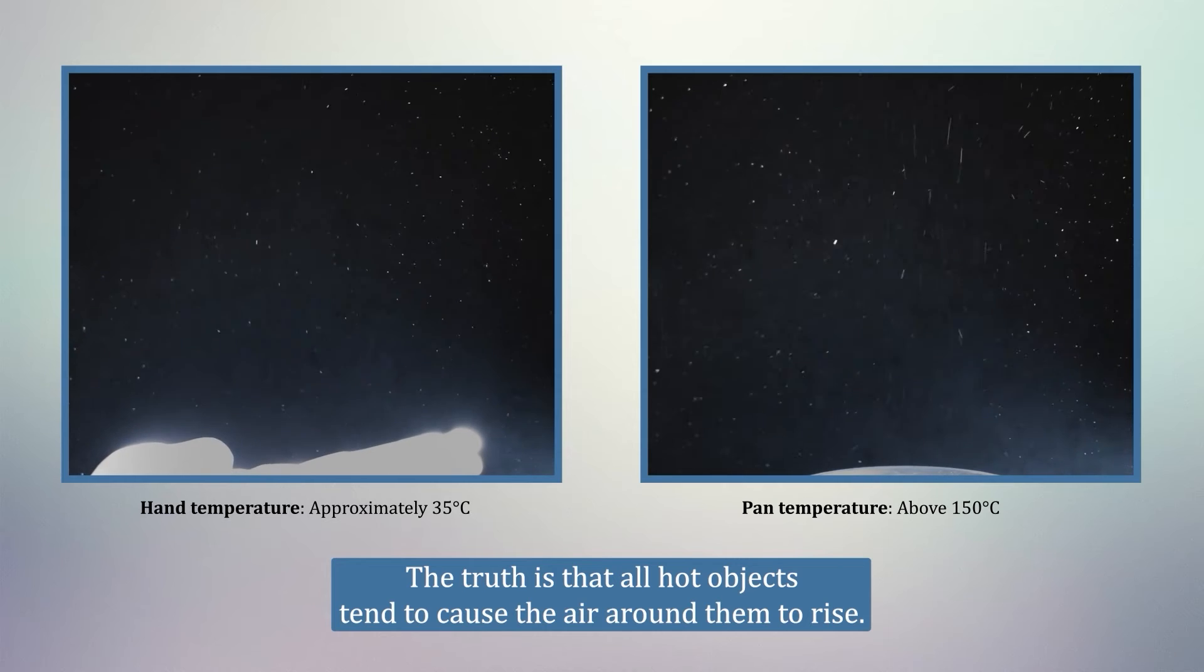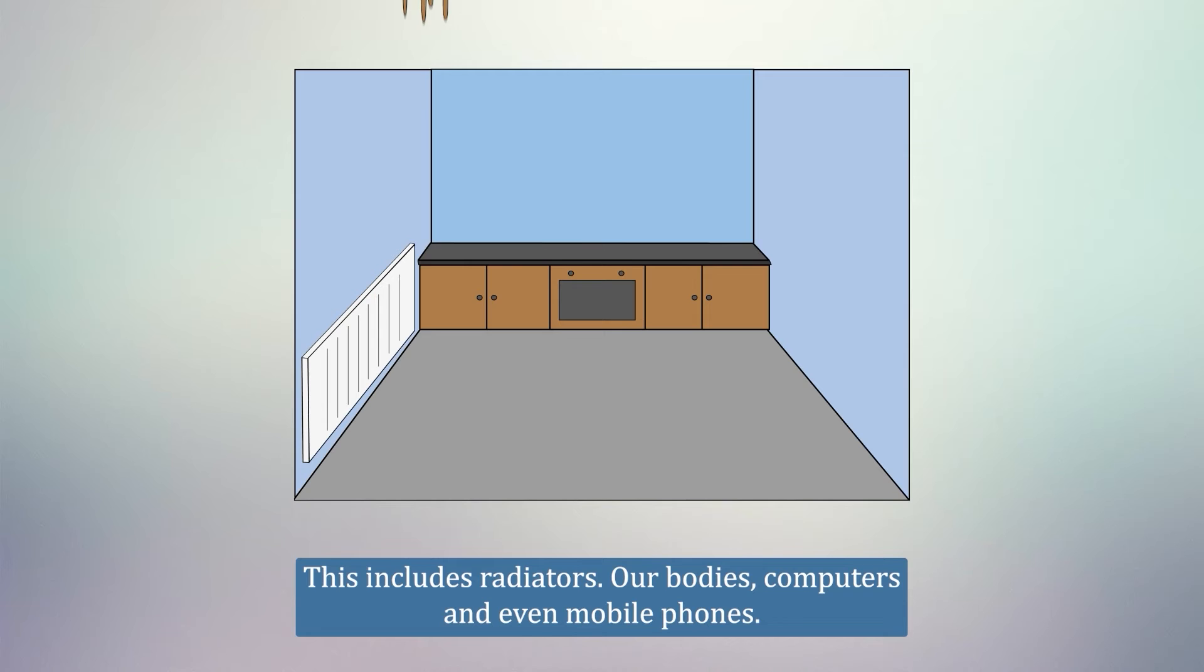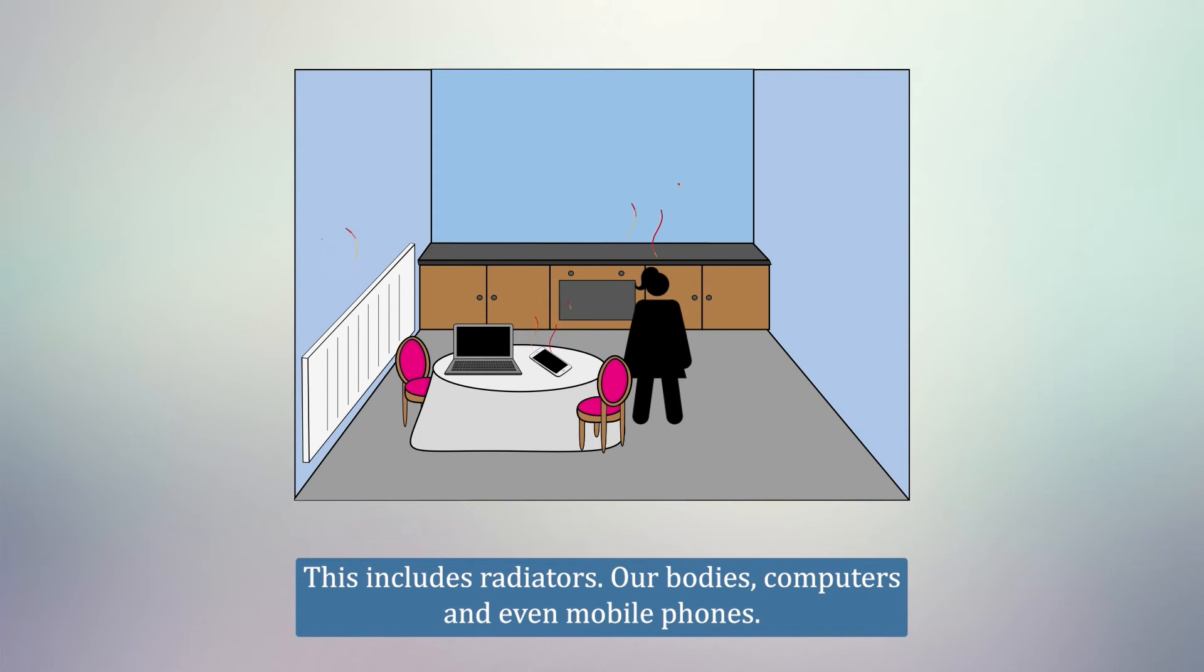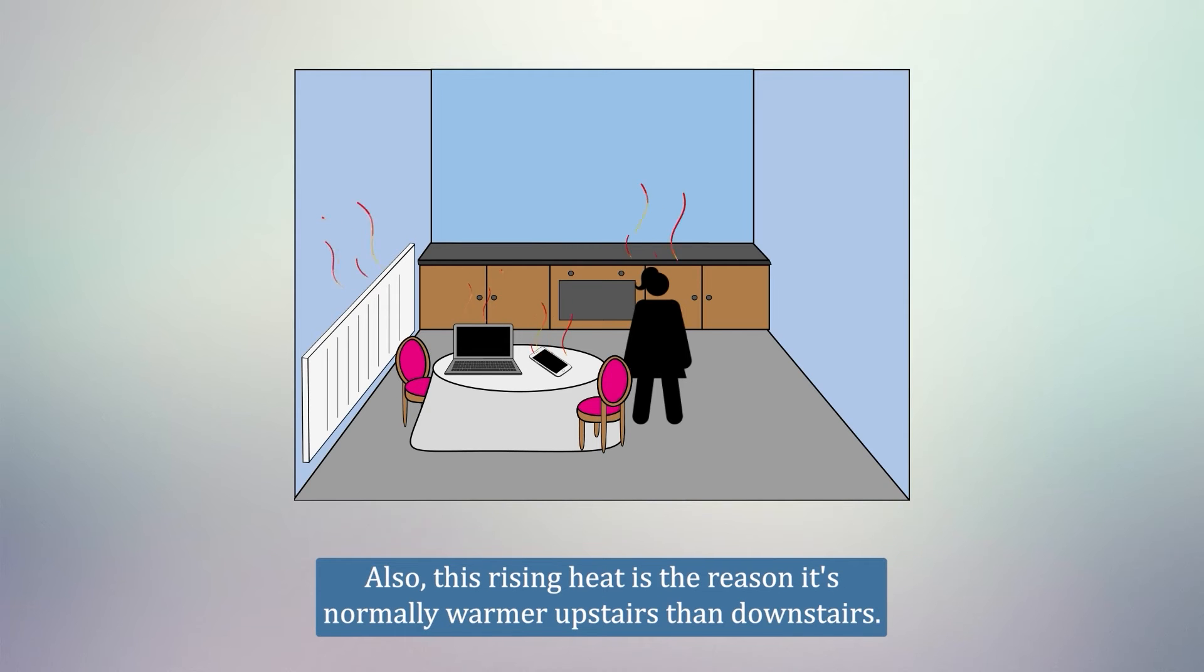The truth is that all hot objects tend to cause the air around them to rise. This includes radiators, our bodies, computers, and even mobile phones. This means that your own body heat has the power to influence the air flows around you. Also, this rising heat is the reason it's normally warmer upstairs than downstairs.